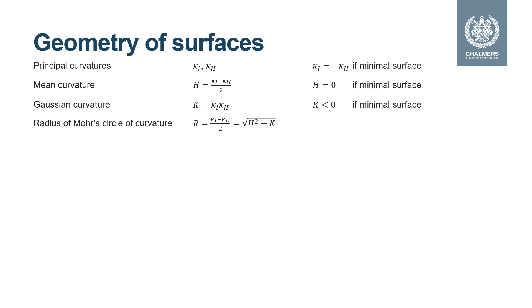For minimal surfaces the principal curvatures are equal but of opposite sign and therefore the mean curvature is zero and the Gaussian curvature is negative.